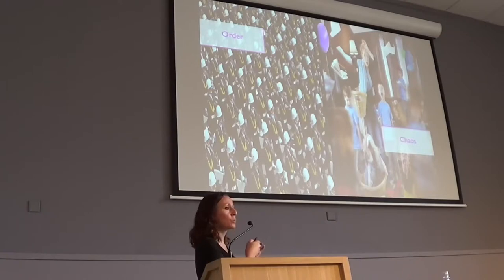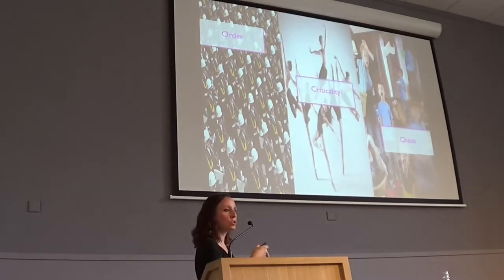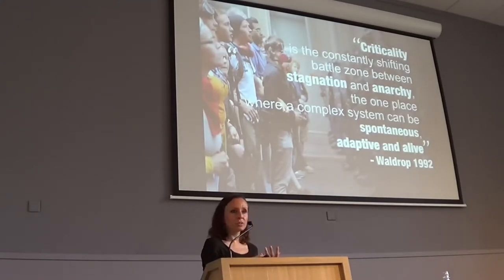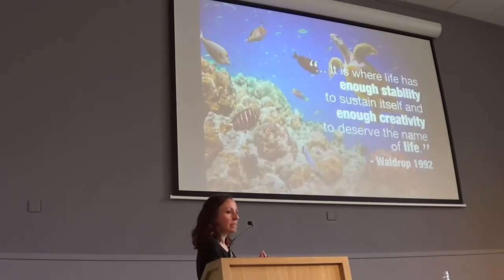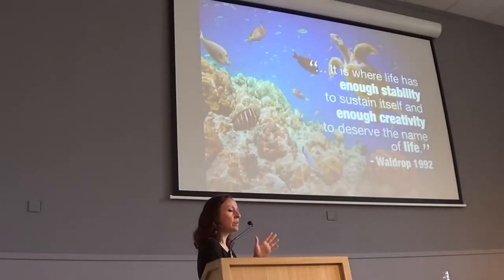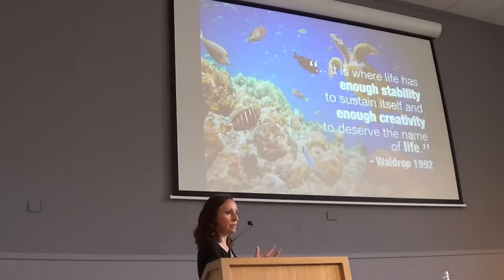There is one particular scenario where complex dynamical systems show this kind of repertoire expansion: when they approach what is called criticality. Criticality is a special type of dynamics that emerges just at the boundary — at the transition between order and chaos — when these two very opposite types of dynamics are actually in balance. It is described as the constantly shifting battle zone between stagnation and anarchy: the one place where a complex system can be spontaneous, adaptive, and alive — where life has enough stability to sustain itself and enough creativity to deserve the name of life.